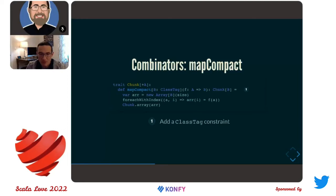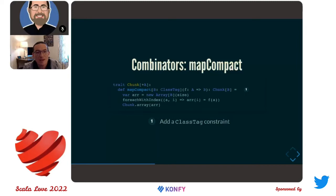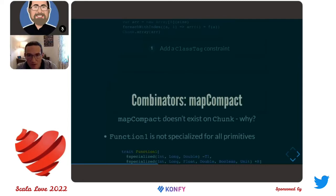Maybe that's debatable — but certainly when I go to create a Functor instance for Chunk, I don't want to parameterize that Functor instance by the ability to have some ClassTag appear out of nowhere. In fact, I physically cannot make that compile. So it's okay to provide this operation `mapCompact` which has a ClassTag constraint — but it's no longer `map`. So how can we keep the signature of `map` without compromising on any of our design constraints?